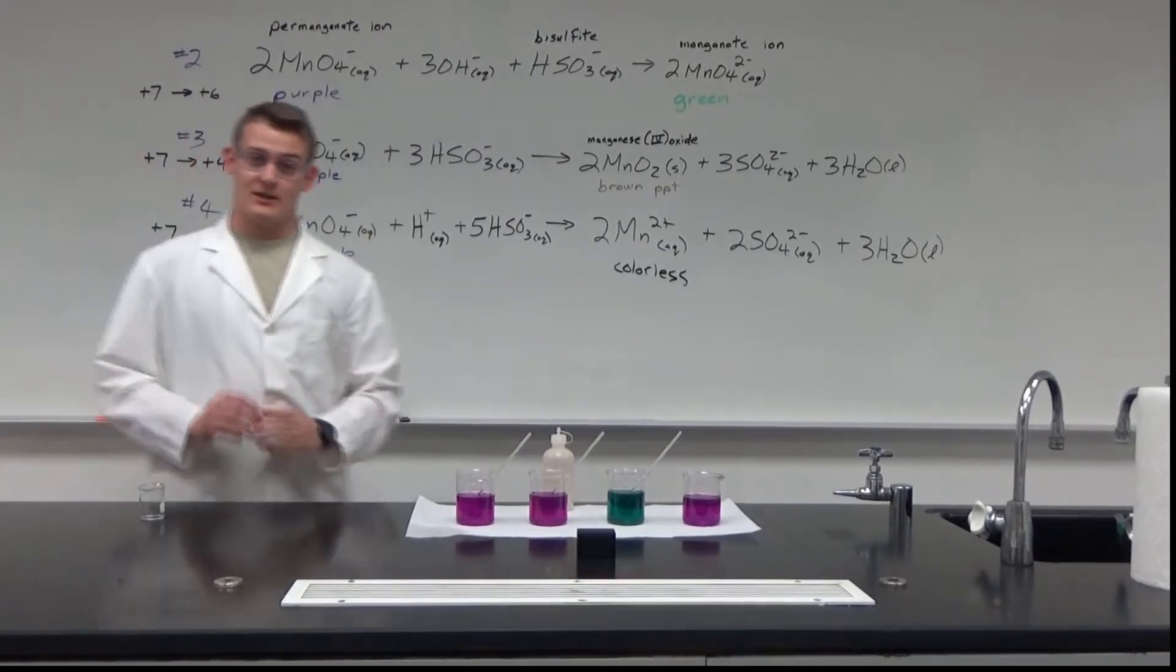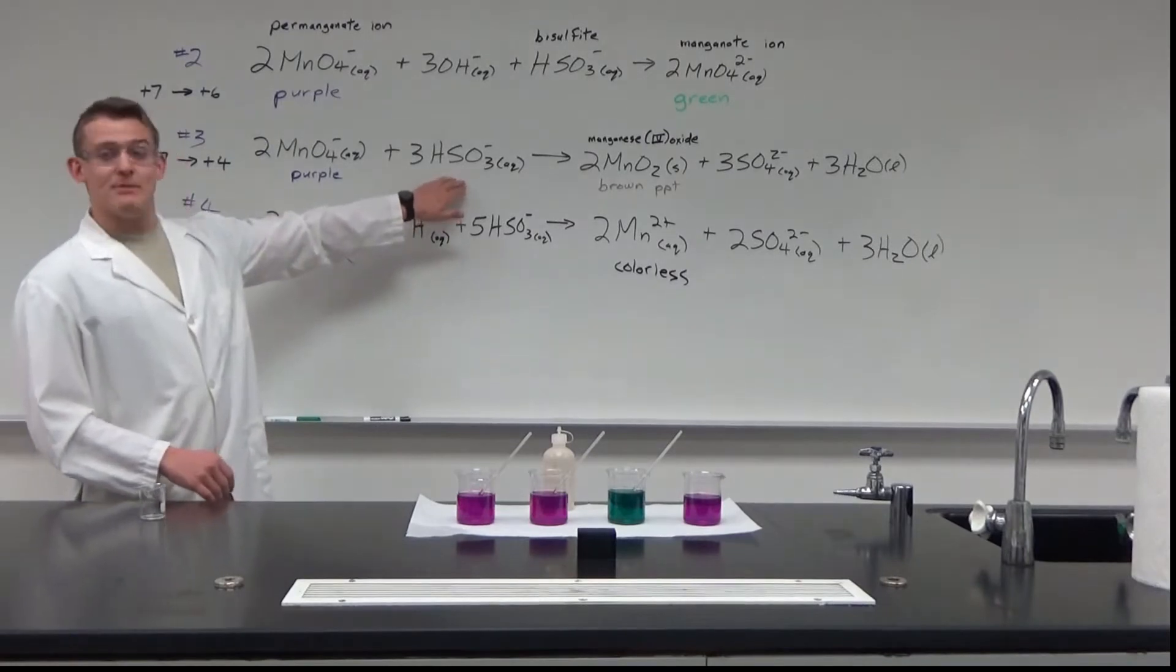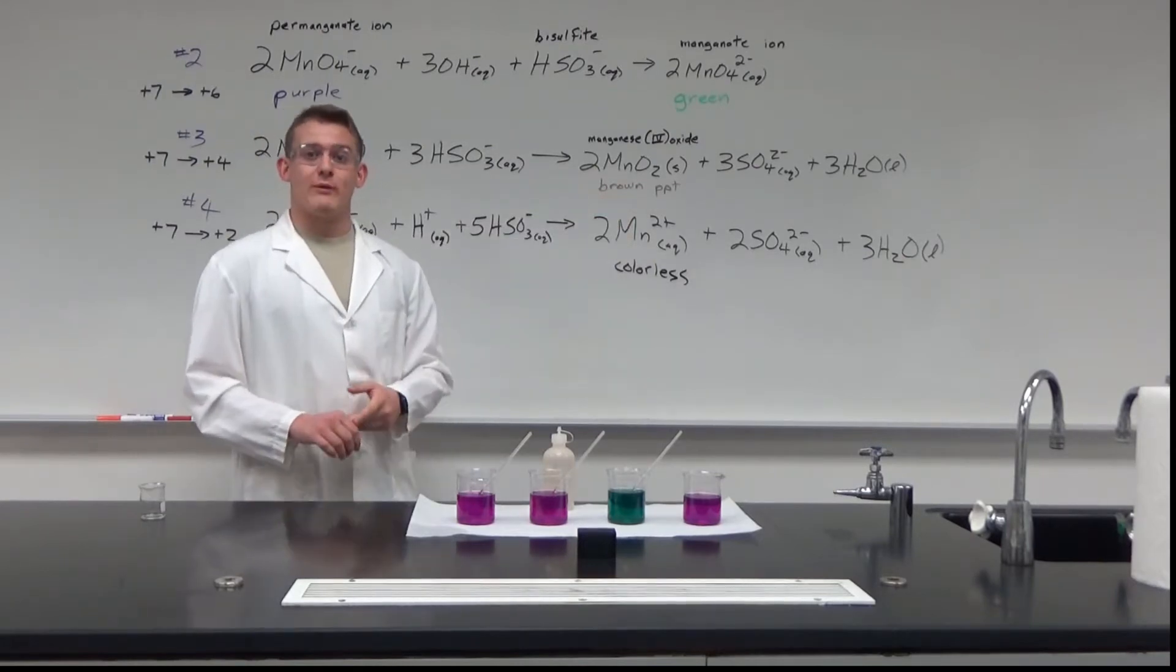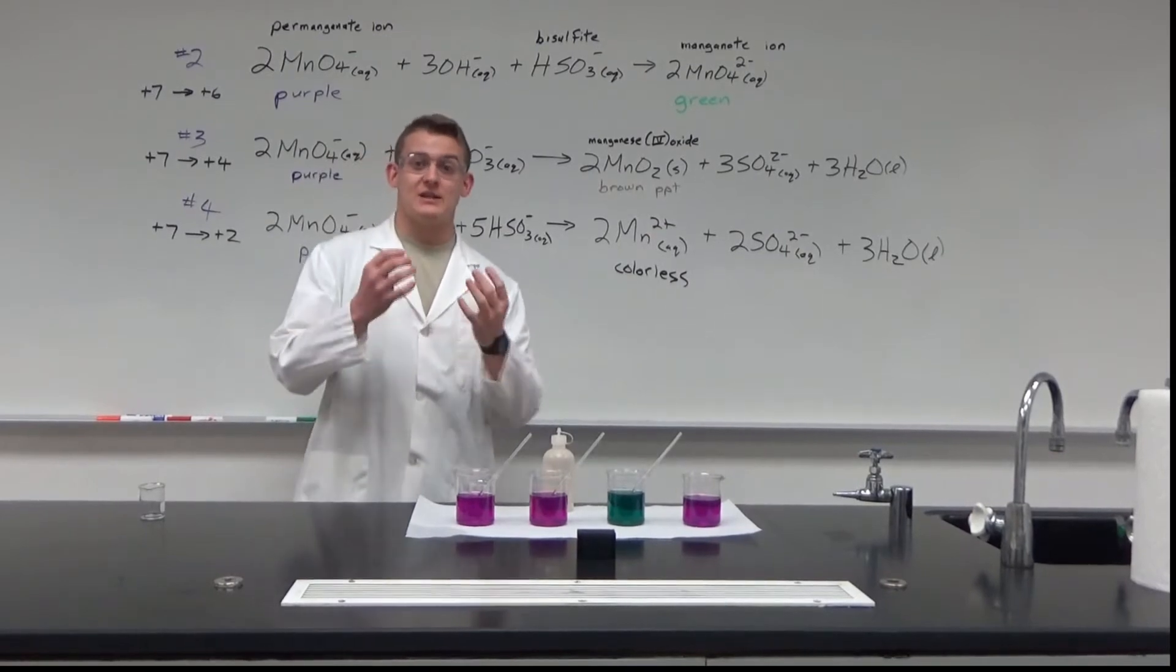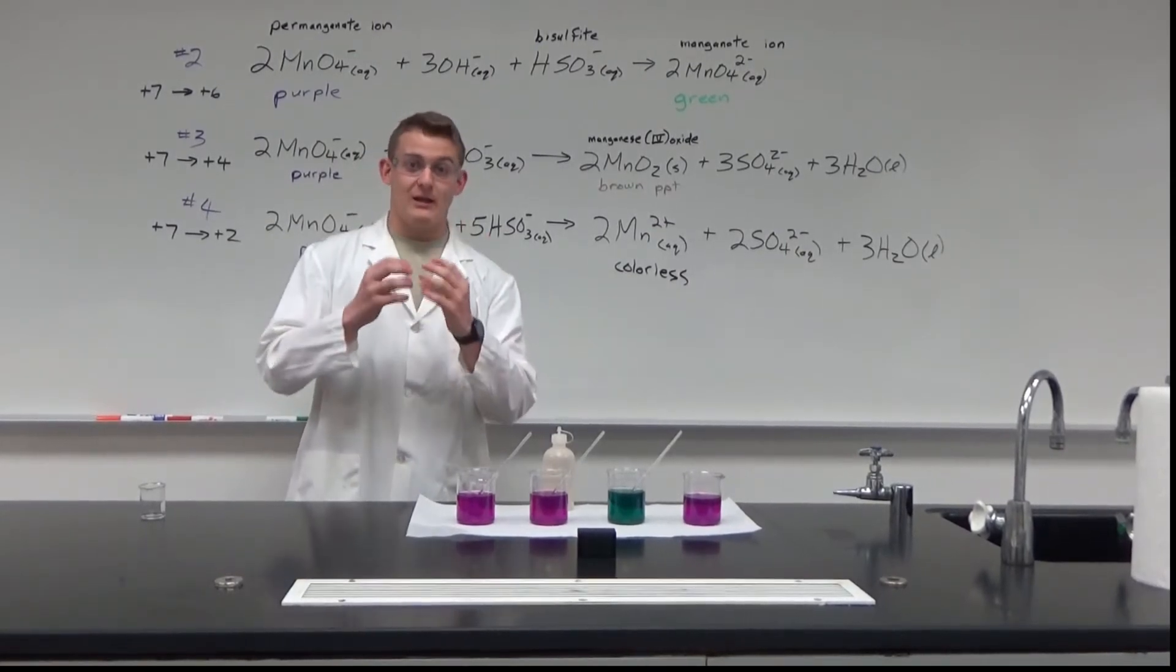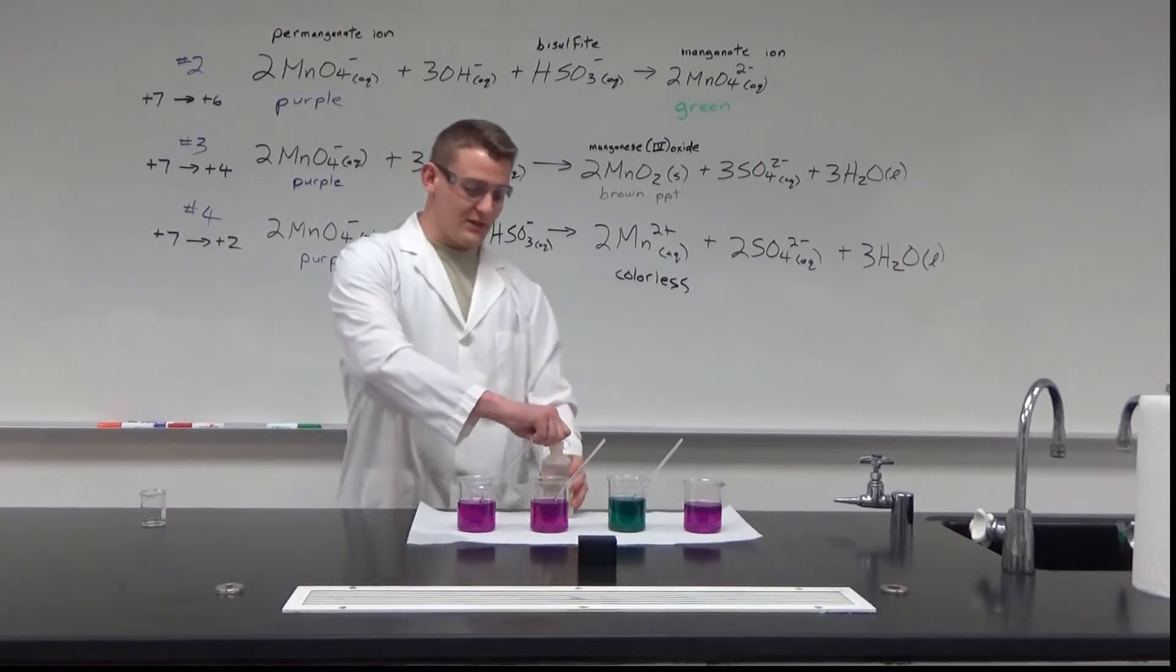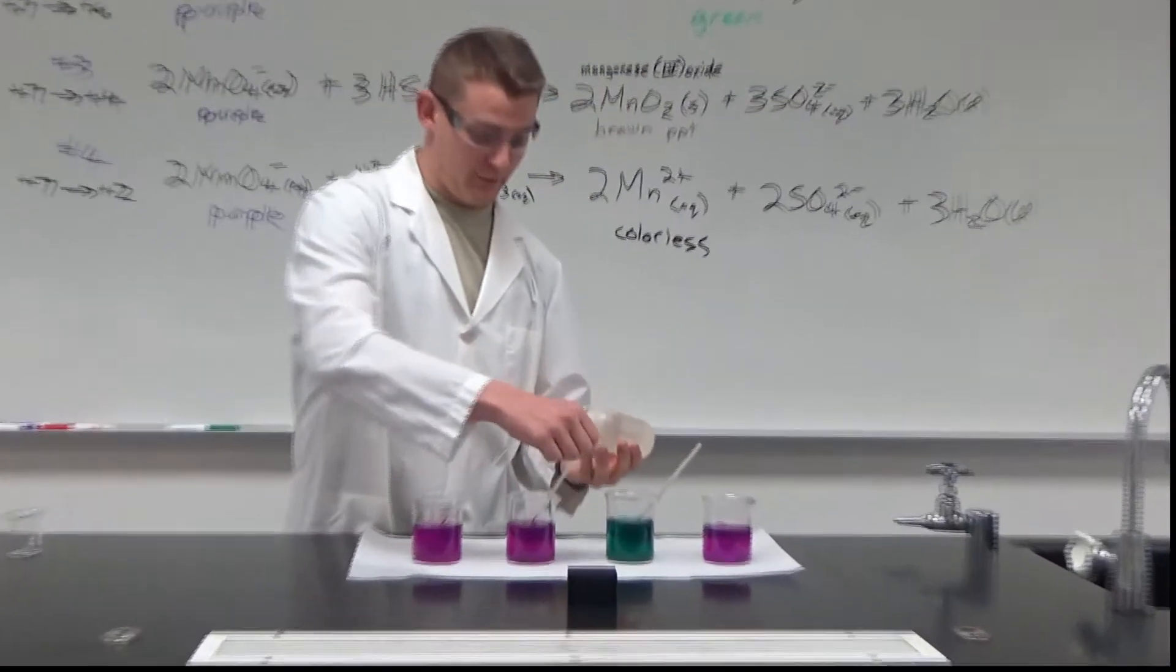The second demonstration we're going to be doing is we're going to just be adding bisulfite to our permanganate ion solution. And what we should end up with is a brown kind of cloudy solution. And what that cloudiness is, that's a precipitate forming. And that precipitate is what's making it cloudy, but over time that should settle at the bottom of the beaker, and the solution should be a little bit clearer. So I'll go ahead and demonstrate that for you.